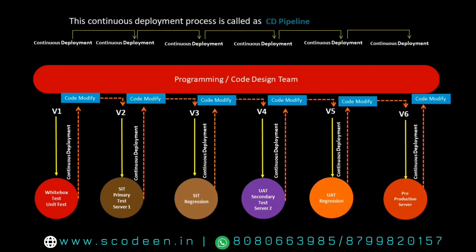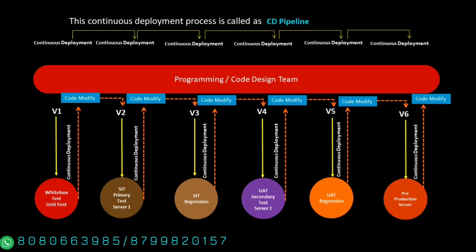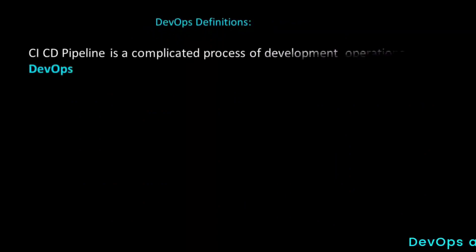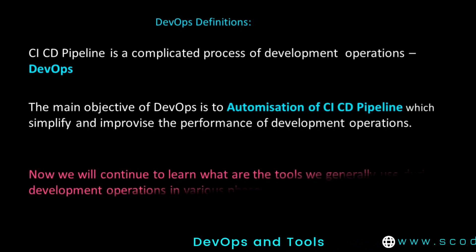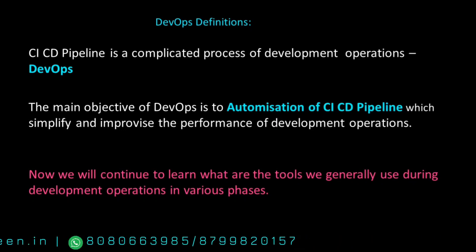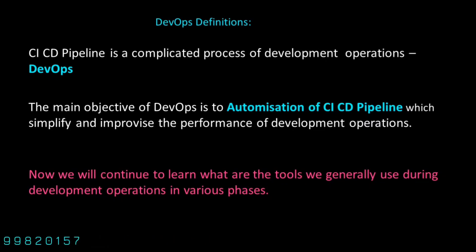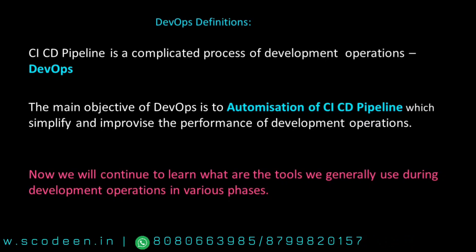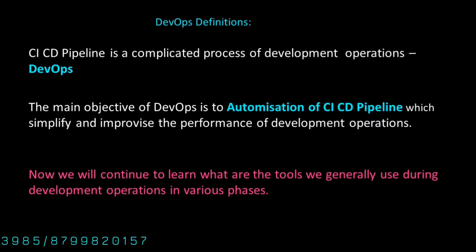The CI/CD pipeline is the most complex task during development operation activities. The main objective of DevOps is the automation of the CI/CD pipeline, which will simplify and improve the performance of development operations. To implement this automation process, we are going to use various tools.